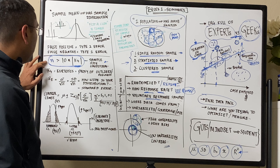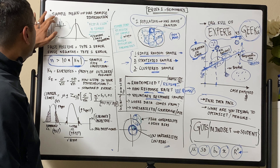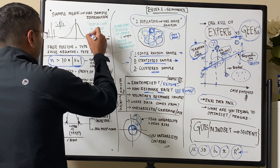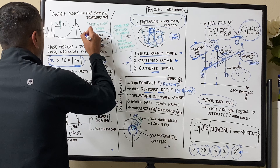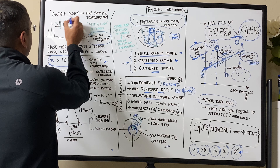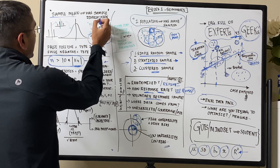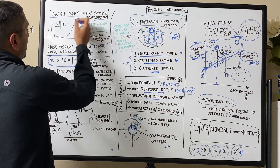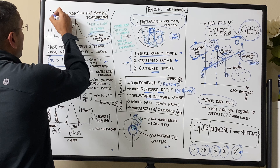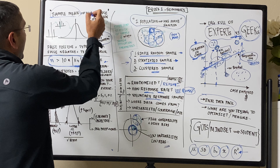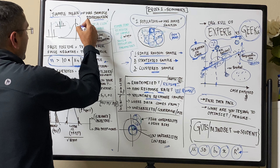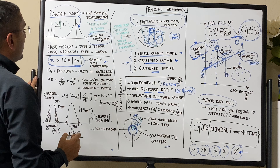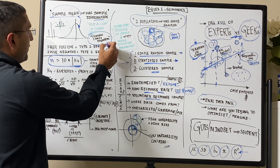Next up — we talked about sample size conditions, but this is an important concept: the Central Limit Theorem. This is super critical. The Central Limit Theorem says that the sample mean has a sampling distribution. In other words, your sample mean has a distribution that looks like a normal distribution. That is the Central Limit Theorem, and it's very powerful.